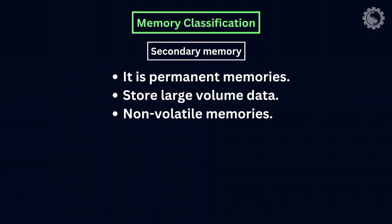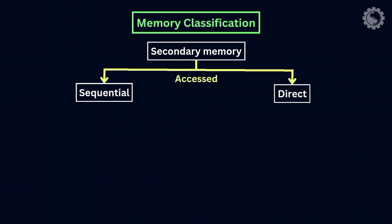Secondary memories are also non-volatile memories because they keep data when power is lost. They are classified based on how data is accessed: sequential or direct.